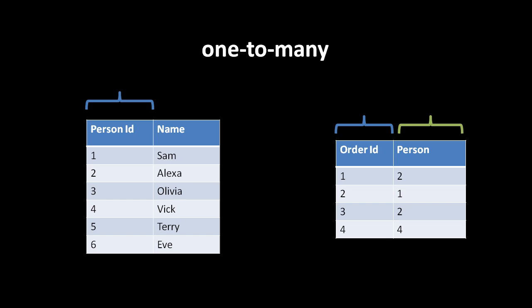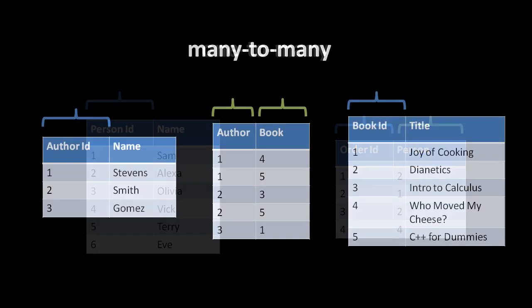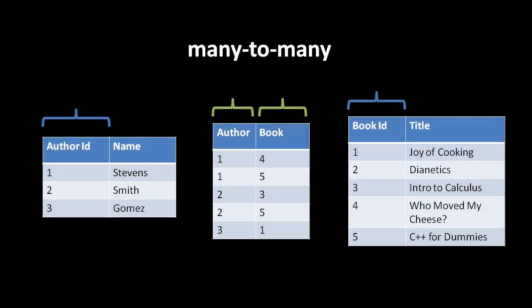The best approach for many-to-many relationships is less obvious because it involves introducing a third table. For example, we have authors and books — each author might have multiple books, and each book might have multiple authors. The only way to properly express this is by introducing a third table matching up authors with books. This third table has two foreign keys, one for author ids and one for book ids. A table can have as many foreign keys as necessary, unlike primary keys.